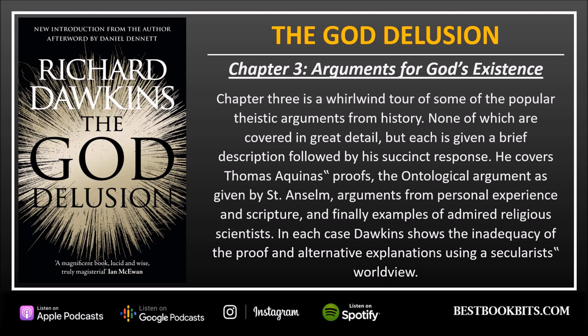Chapter 3: Arguments for God's Existence. Chapter 3 is a whirlwind tour of some of the popular theistic arguments from history. None are covered in great detail, but each is given a brief description followed by a succinct response. Dawkins covers Thomas Aquinas' proofs, the ontological argument given by Saint Anselm, arguments from personal experience and scripture, and finally examples of admired religious scientists. In each case he shows the inadequacy of the proof and offers alternative secular explanations.